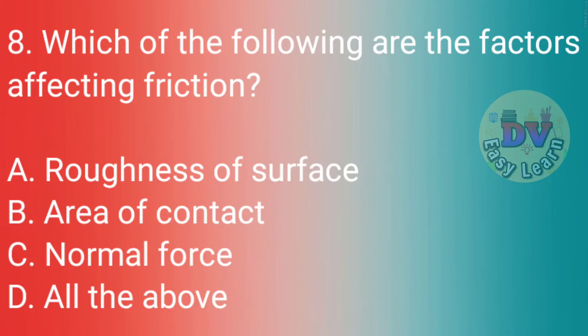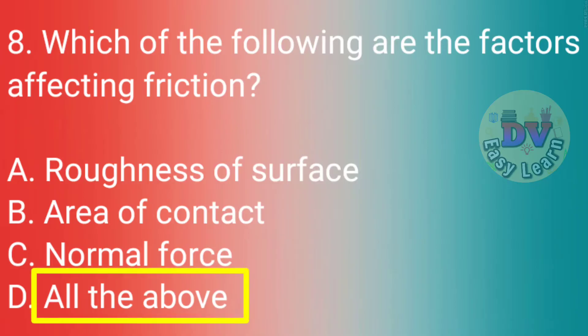Q8. Which of the following are the factors affecting friction? Correct answer: All the above — roughness of surface, area of contact, and normal force.